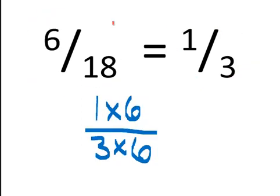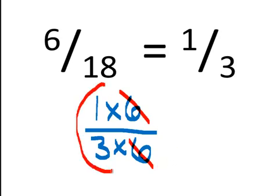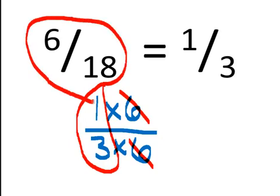We'll take a look at another example. Here we have 6 eighteenths, and the equivalent fraction of 6 eighteenths is 1 third. But how did we get there? Well, in this case, we could multiply 1 times 6 and 3 times 6. 1 times 6 is 6, and 3 times 6 is 18. That gives us a 6 in the numerator and a 6 in the denominator, and they cancel each other out, leaving us with 1 third. So 1 third and 6 eighteenths are equivalent fractions.